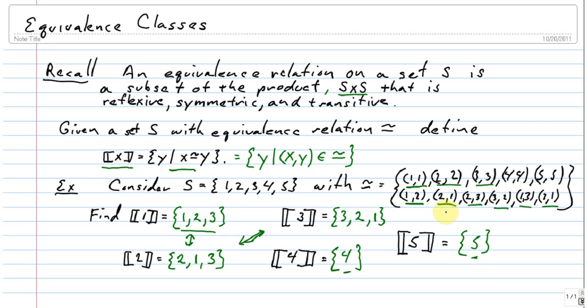Now suppose we added another couple of relations into this set and we put 4 is related to 5. 5 is related to 4. That actually, you can check, it's still an equivalence relation, this set. And then we'd have to add into here 5. We'd have to add into here 4. And you can kind of see right away that if two elements are related to each other, they're going to have the same equivalence class.